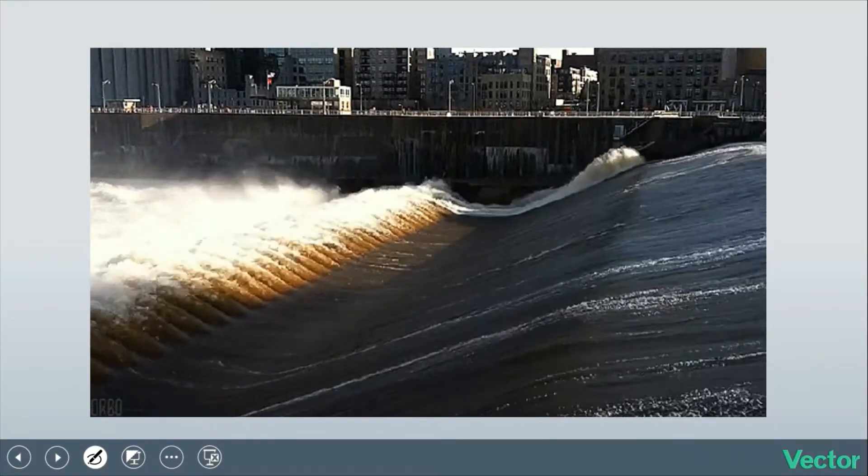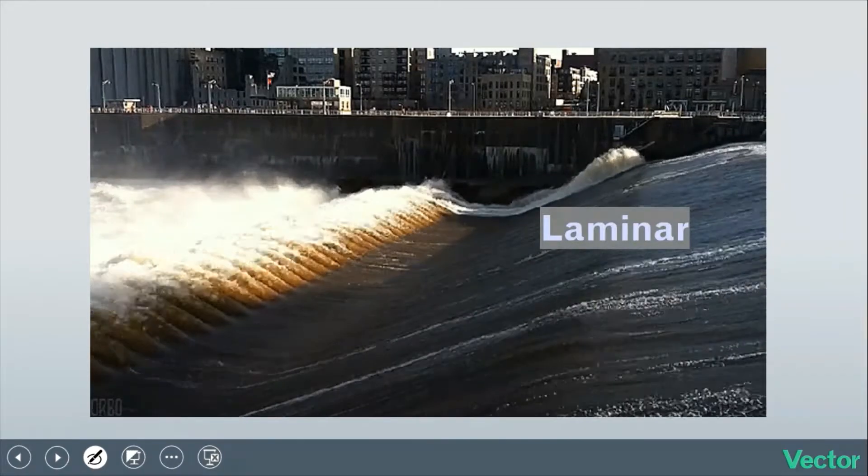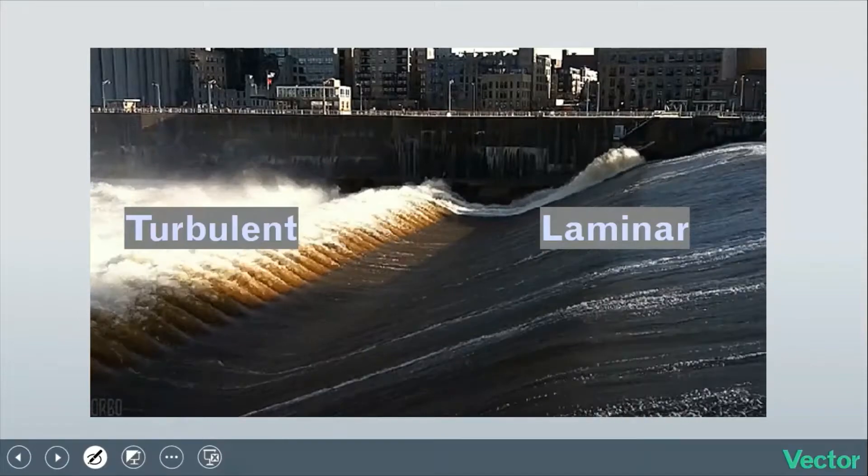Fluid flow can either be smooth, ordered, and layered, which is called laminar flow, or it can be rough, disorganized, and irregular, which is called turbulent flow.